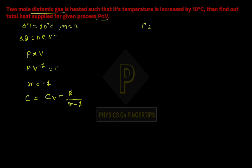So C value will be 5R/2 - R/(-1-1) = 5R/2 + R/2, which equals 3R. So we'll substitute this value.